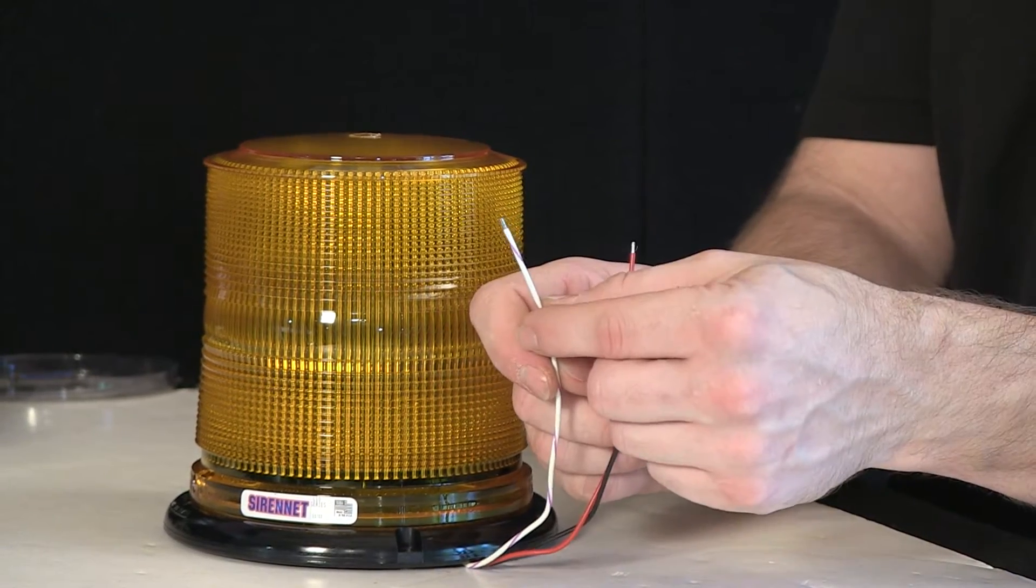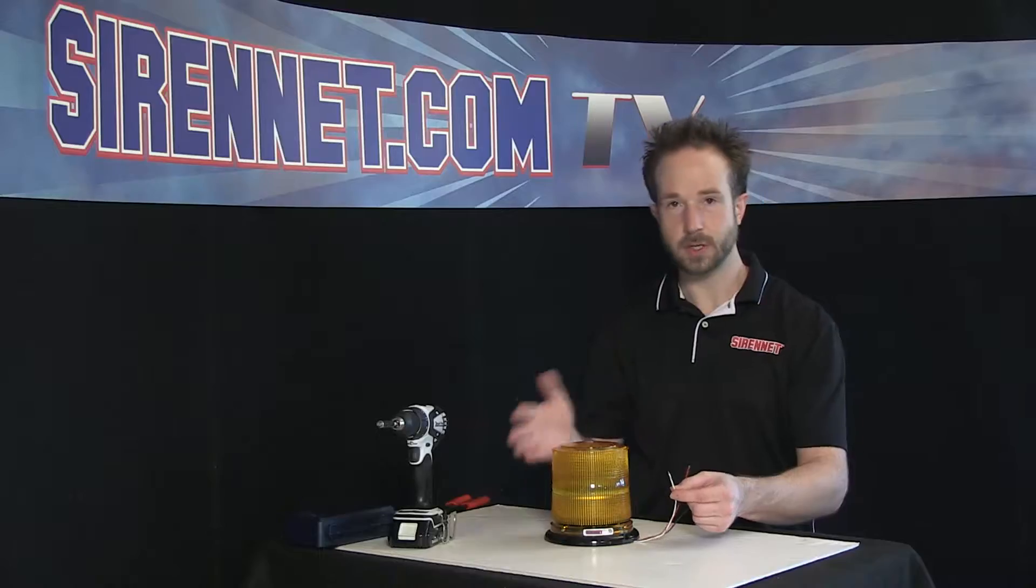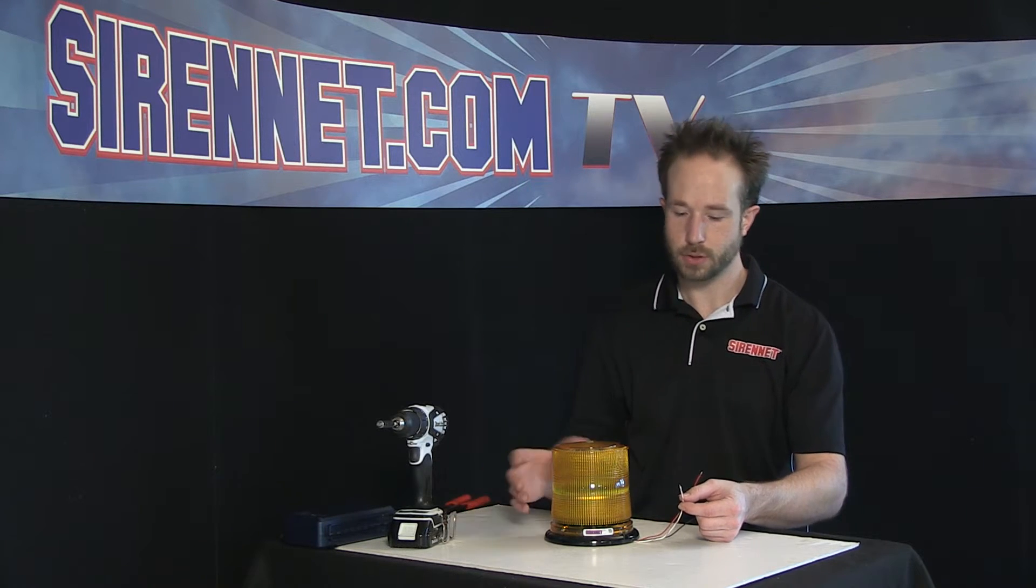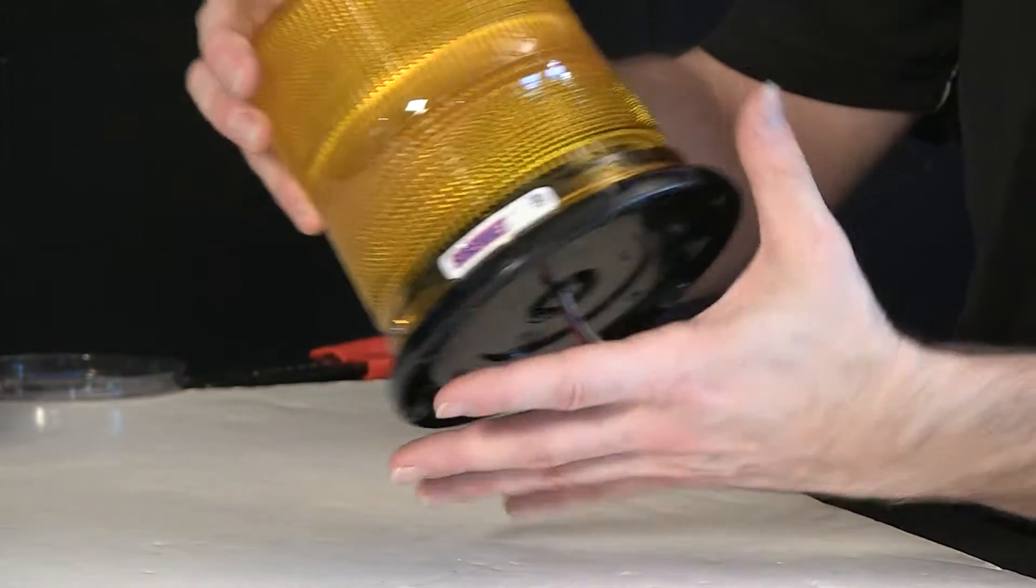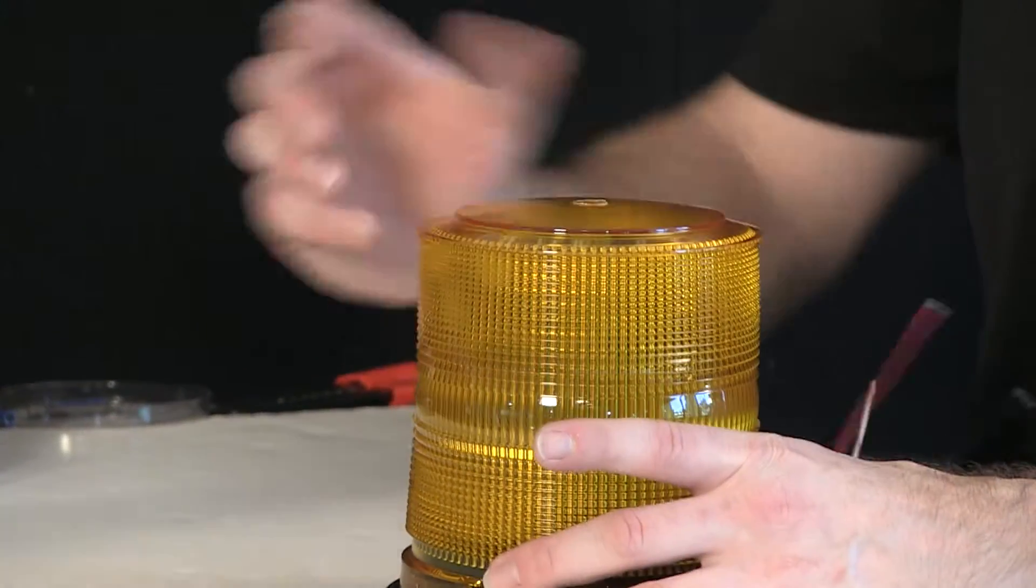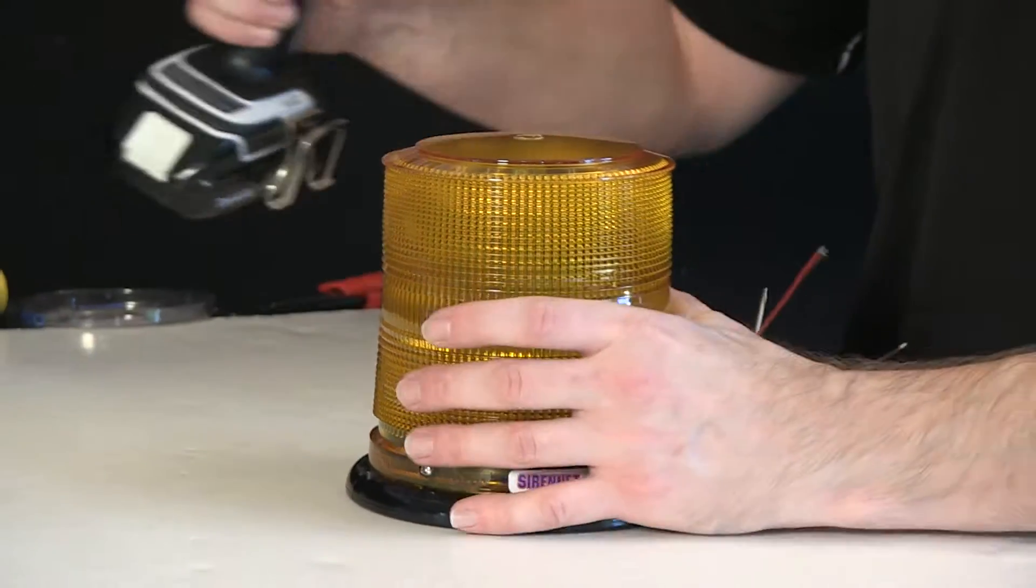I'll show you this in a few moments, but it allows for the beacon to be adjusted by the end user to a flash pattern of your choosing. The dome itself is removable. It's held on with two Phillips head screws. I'm going to go ahead and remove those now.